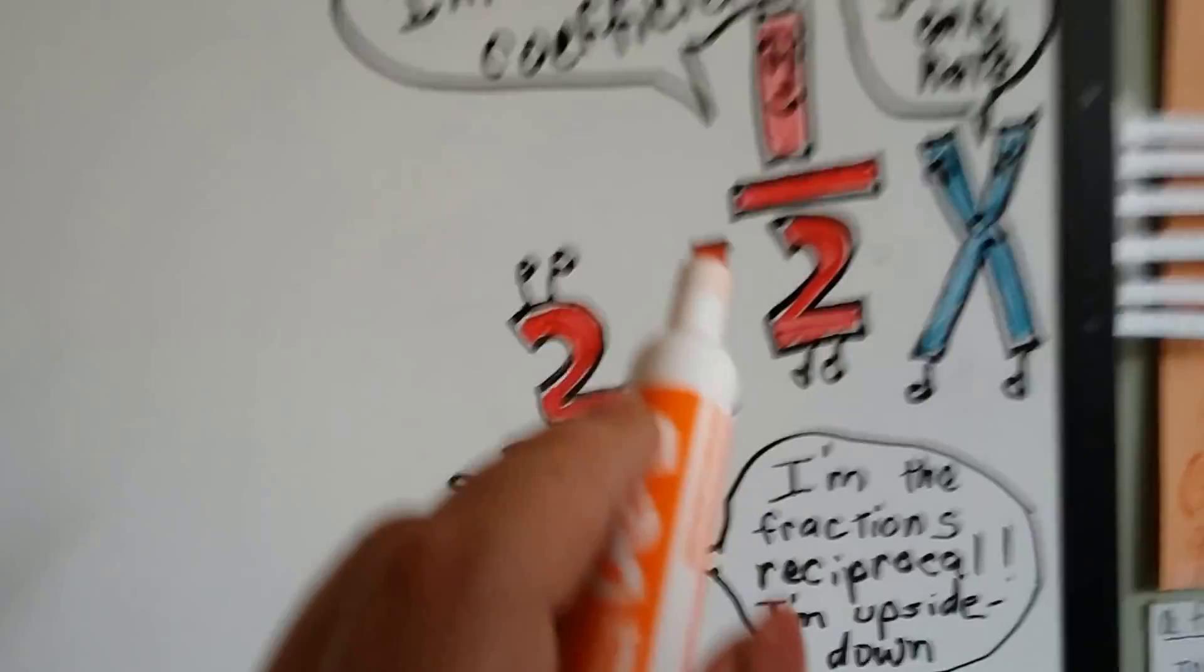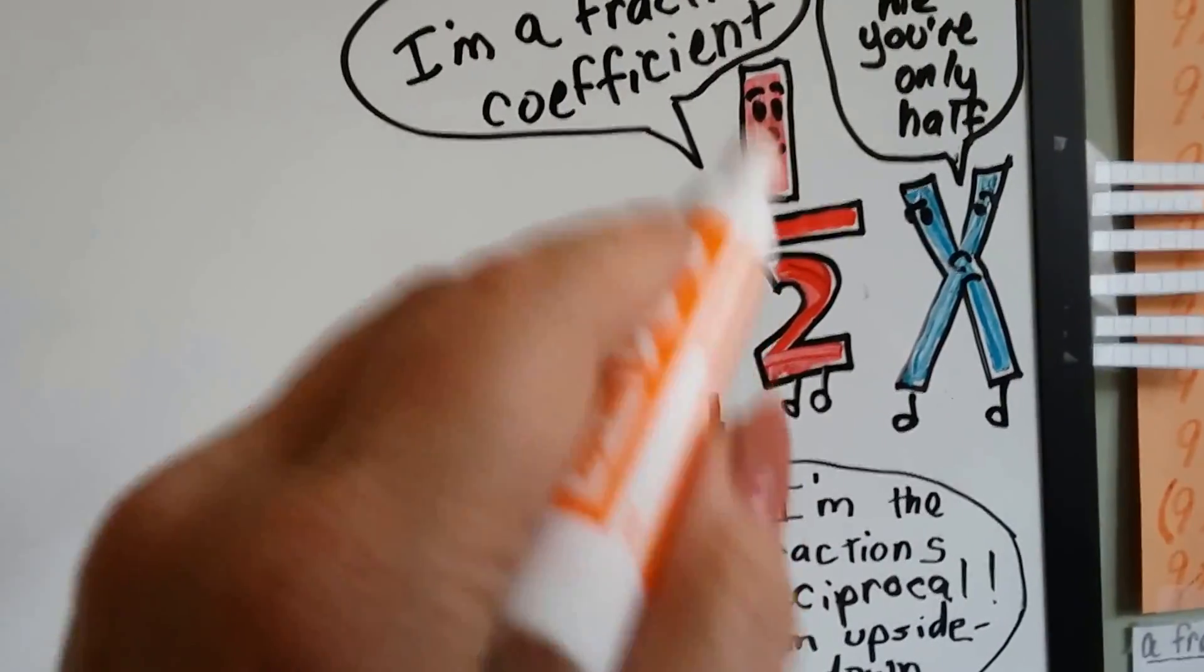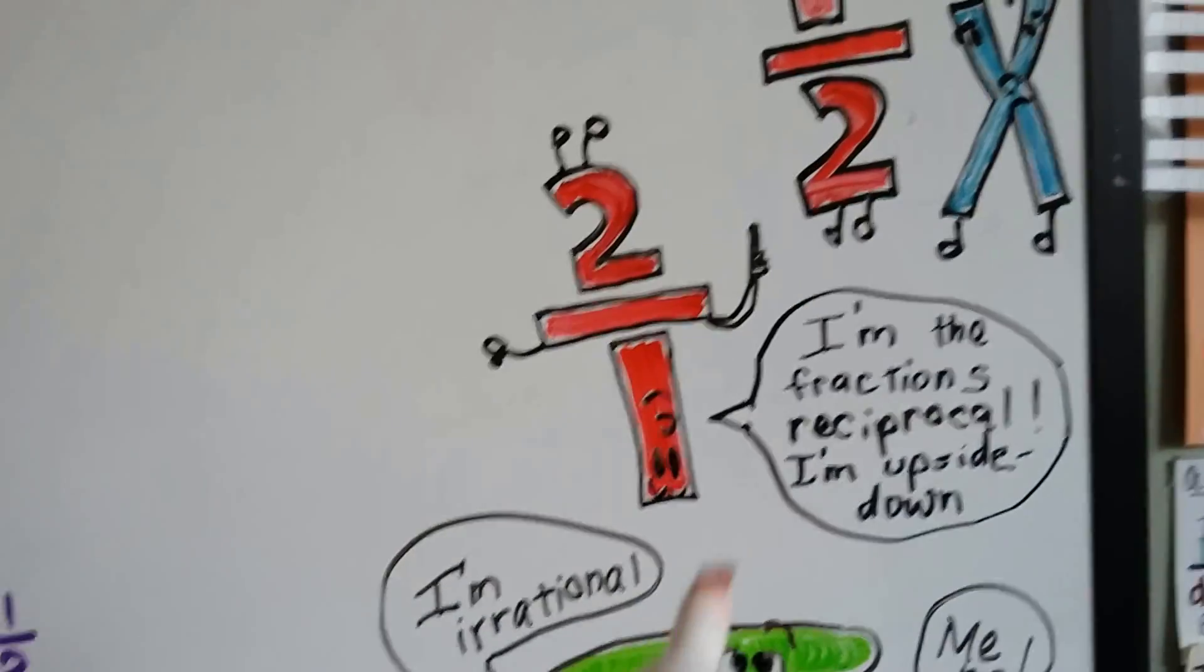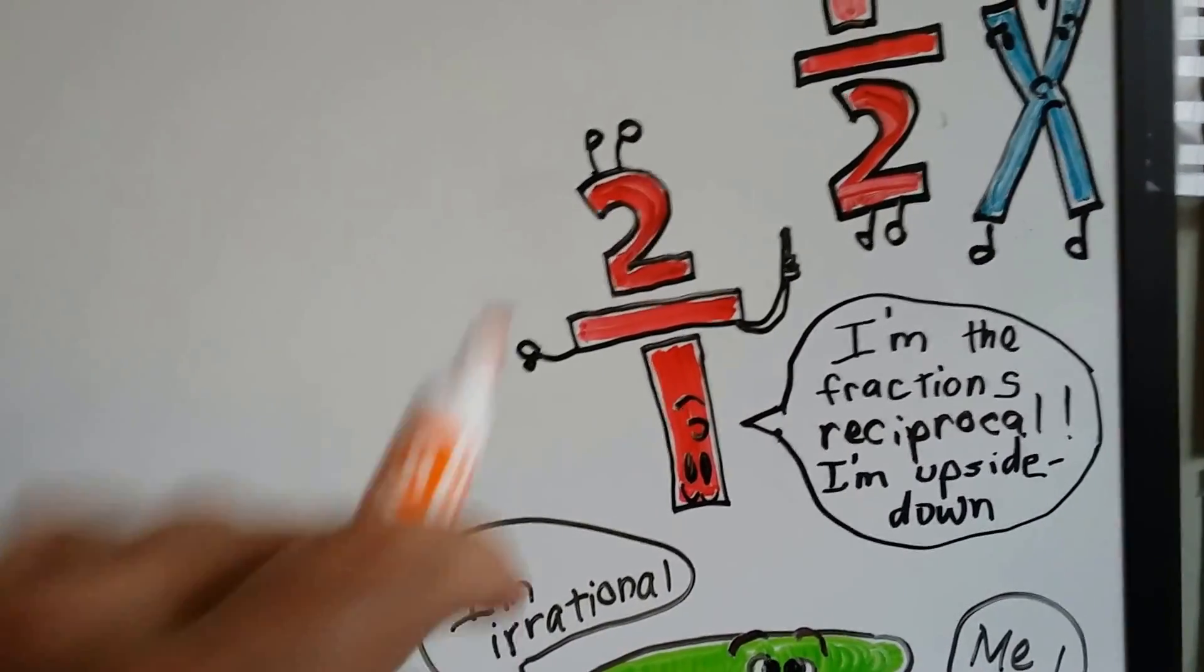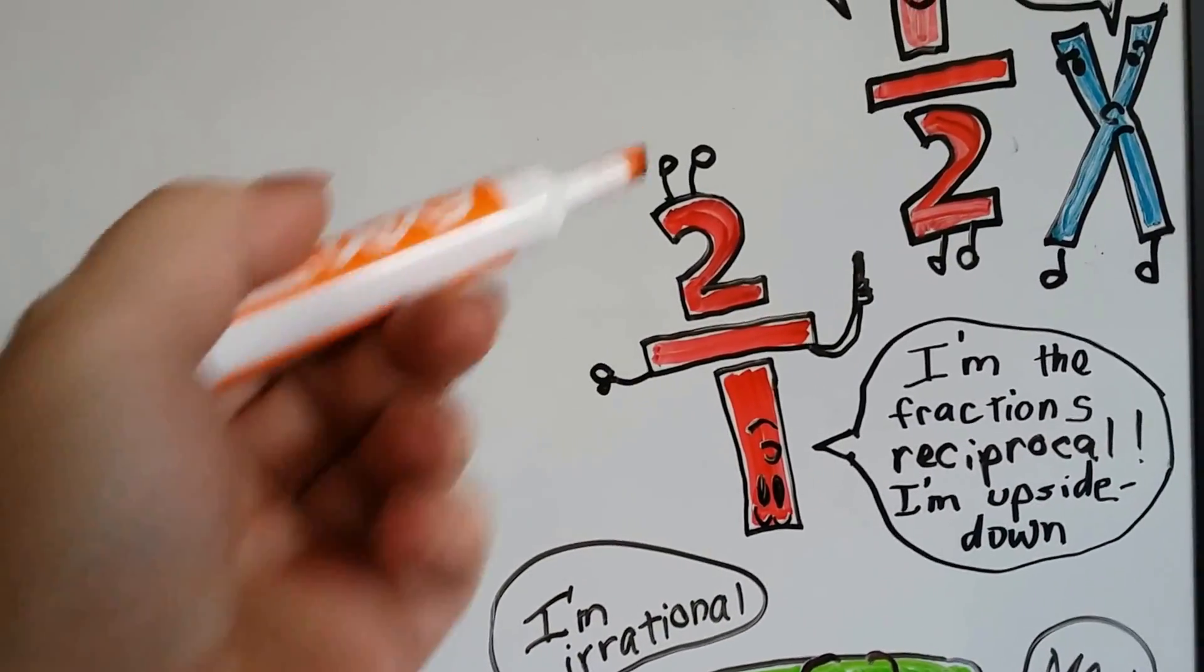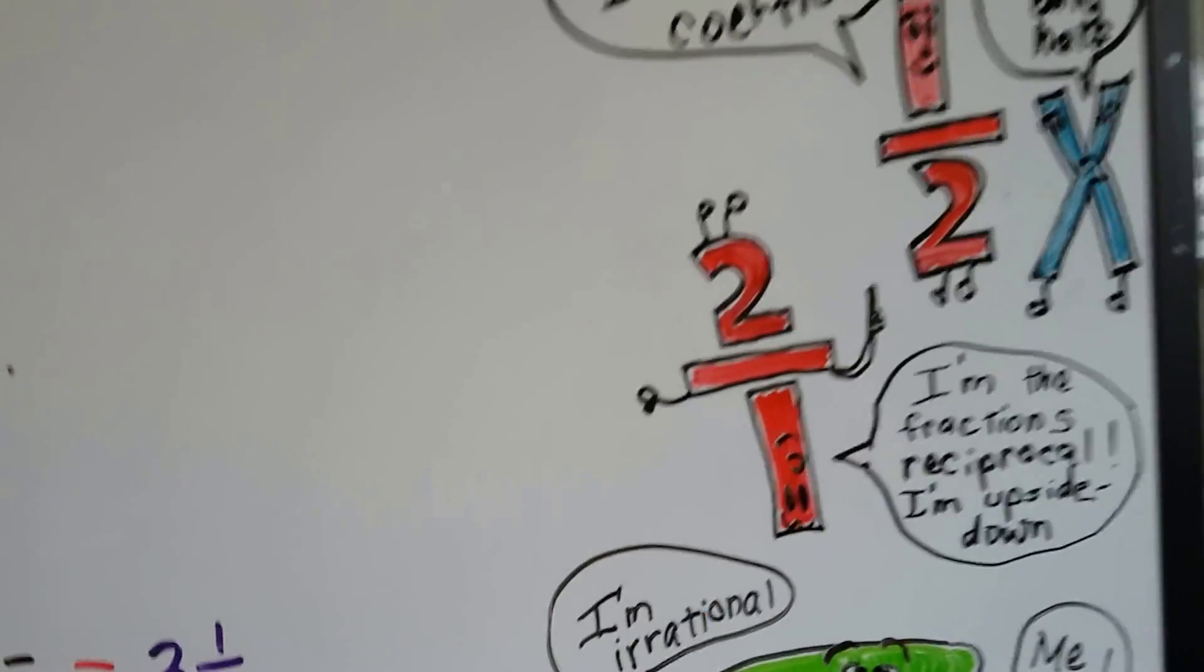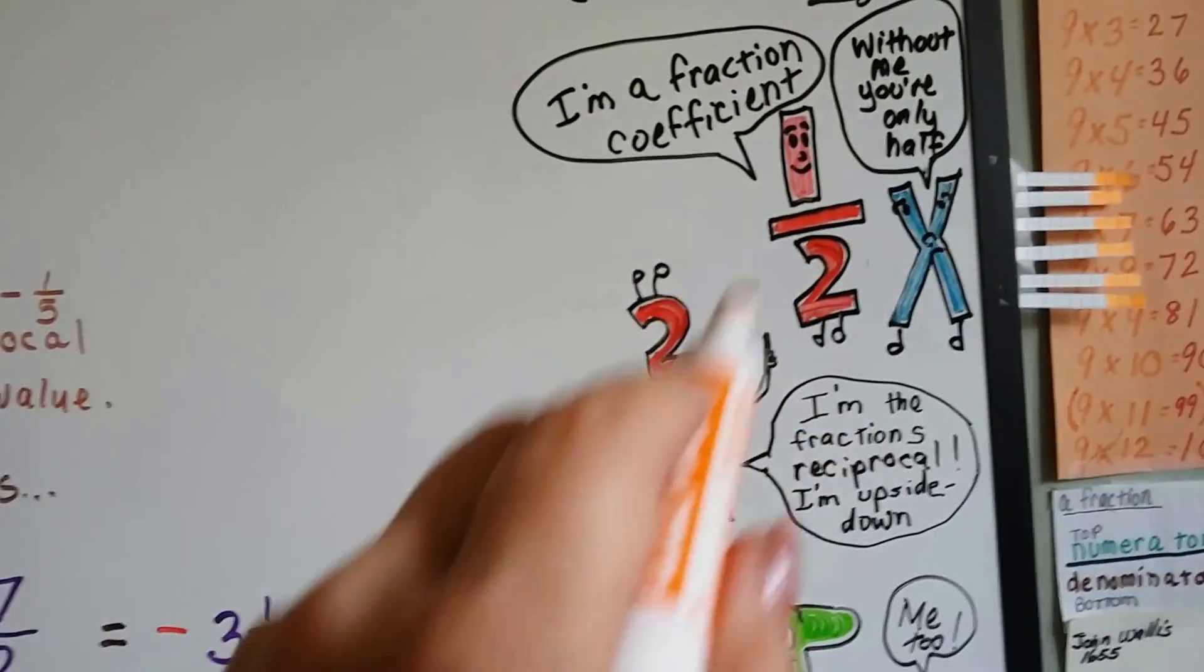And do you remember what a reciprocal is? So if we have a half right here, 1 over 2, the reciprocal is going to be 2 over 1. It's the fraction's reciprocal. He's upside down, he's flipped. His legs are in the air. He is his reciprocal.